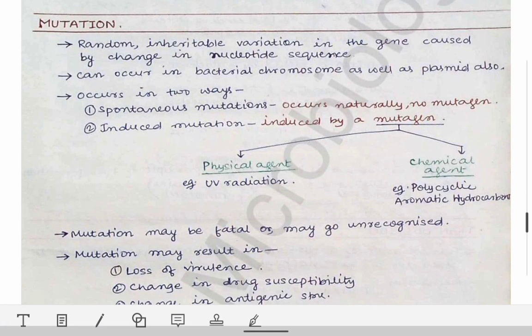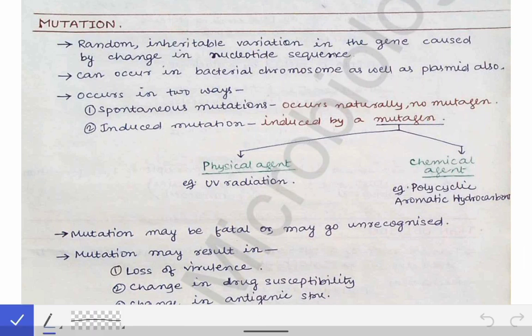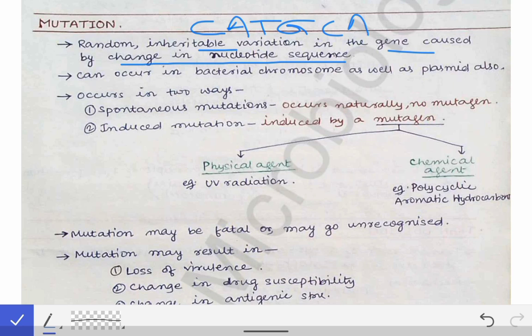The second topic is mutations. Mutations are random, inheritable variations in the gene caused by a change in the nucleotide sequence. All DNA is composed of four nucleotides in different sequences — cytosine, adenine, thymine, guanine — and whenever there is a variation in that sequence, it is called a mutation. Importantly, the variation must be inheritable to qualify as a mutation.